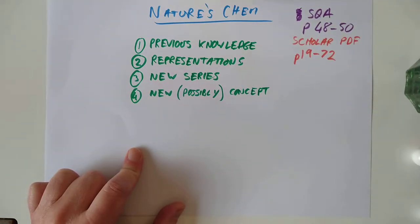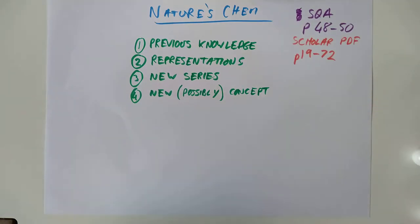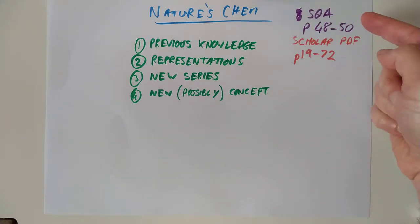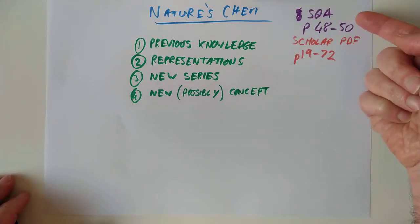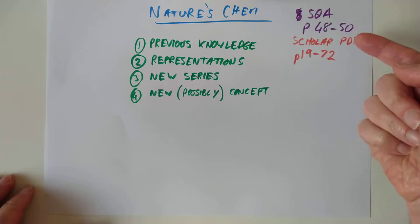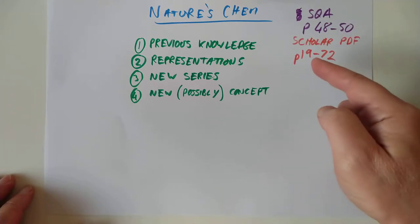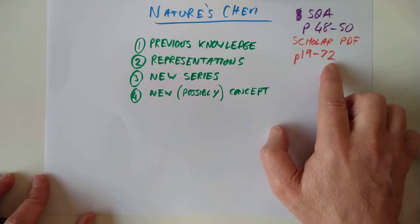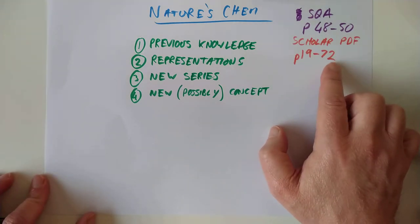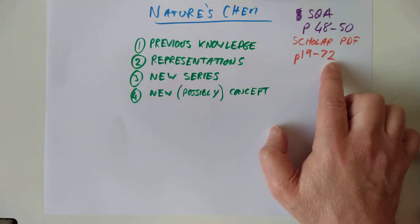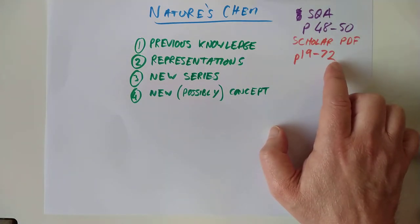Let's run through previous knowledge first. This is covering the work on the SQA course spec, pages 48 to 50, and the Scholar PDF, pages 19 to 72 — which looks horrendous, but don't worry. Scholar never uses one word where 16 words will do; it's not quite as bad as it looks.